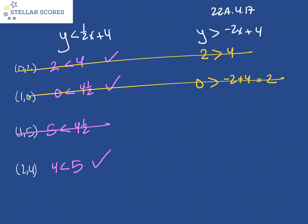And so hey, we must be the last one. Let's double check it just to make sure. So four is greater than negative two times two is negative four, plus four. Four is greater than zero. Yep, that's true.